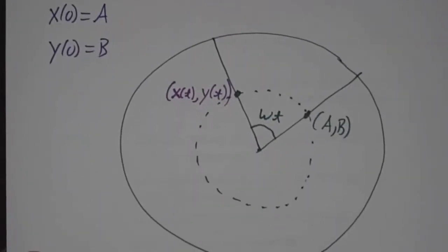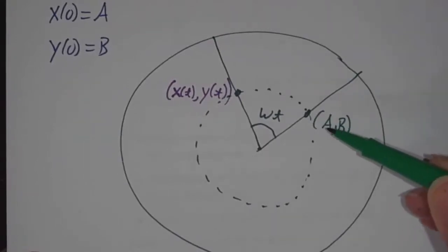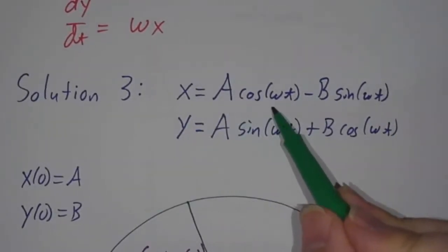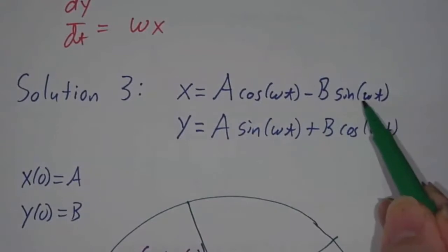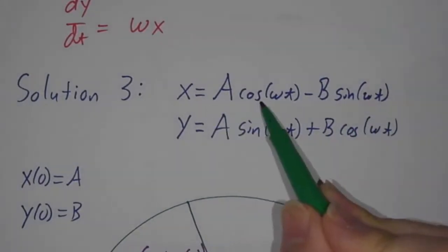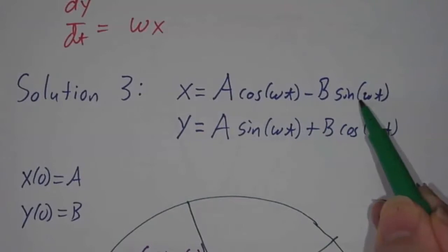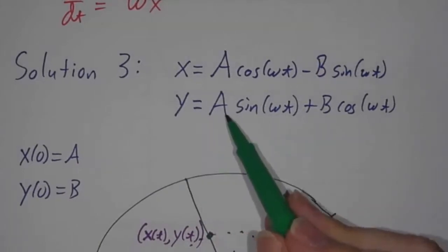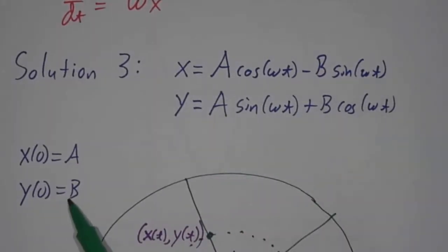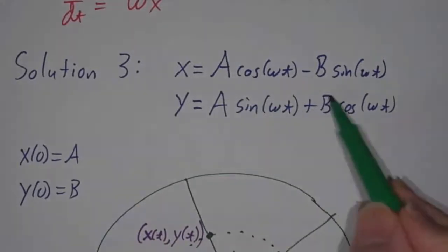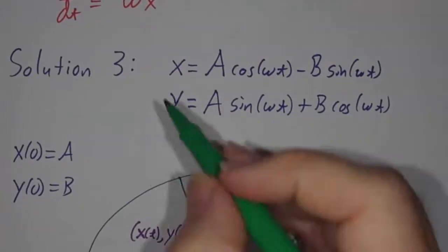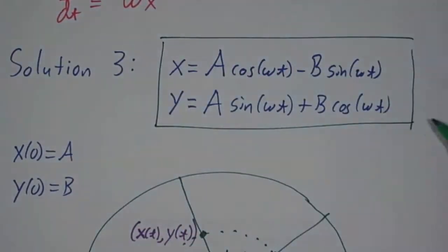And in fact, no matter where you start, you tell me where you start, and I'll tell you what A and B are. Because at time 0, x is A times the cosine of 0, so that's A times 1 minus B times the sine of 0. Sine of 0 is 0. So A times 1 minus B times 0, that's A. So at time 0, x is A, and at time 0, y is A times 0 plus B times 1, that's B. So these numbers A and B are our initial values of x and y. So this is the most general solution. No matter what initial conditions you give me, our solution is going to take that form.